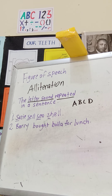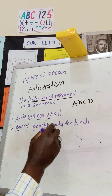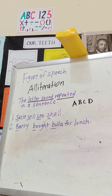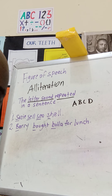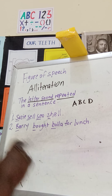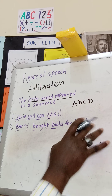'Barry bought bulla for lunch.' You see the B sound coming out. Not all your words have to begin with the same letter sound, but once you see it being repeated and dominant in your sentence, then it is alliteration. 'Barry bought bulla for lunch' — a simple sentence, but it is alliteration.